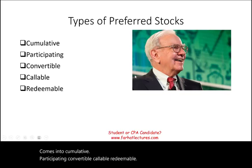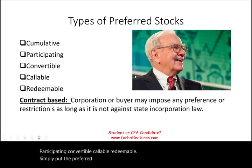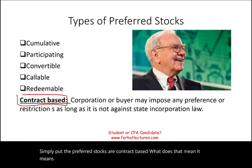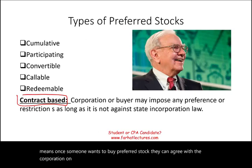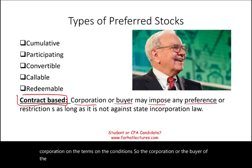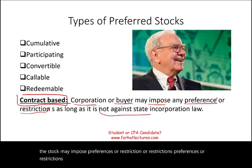Simply put, preferred stocks are contract-based. Once someone wants to buy preferred stock, they can agree with the corporation on the terms and conditions. The corporation or the buyer of the stock may impose preferences or restrictions, as long as it's not against the state incorporation law.